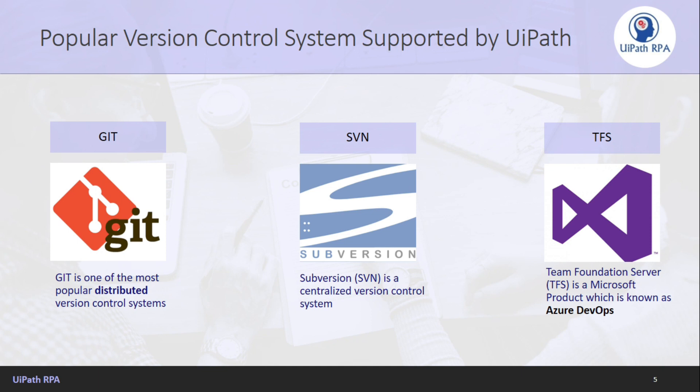There are popular version control systems supported by UiPath that help in project management. Git is one of the most popular distributed version control systems. We have SVN, also called Subversion, which is a centralized version control system. And then we have TFS — Team Foundation Server — which is a Microsoft product also known as Azure DevOps.